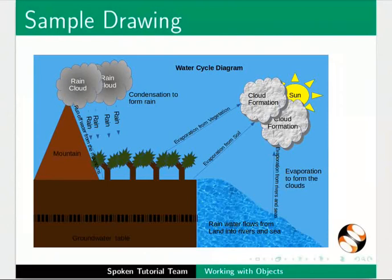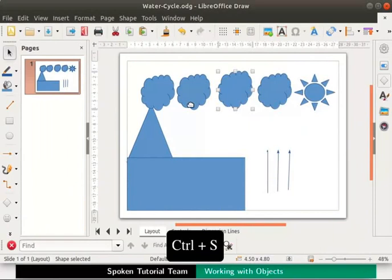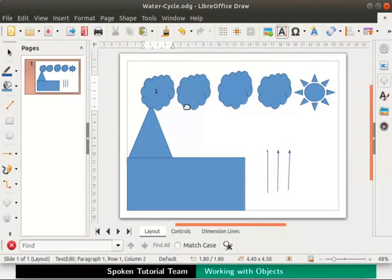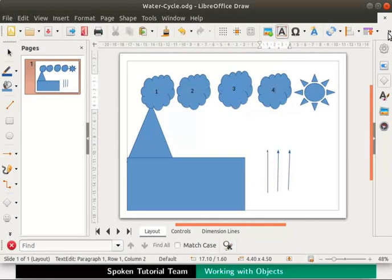Now let us arrange the clouds and the sun as shown. Press Ctrl+S keys to save the file. To identify the clouds let's number them 1, 2, 3, 4 starting from left to right. To insert the numbers, select the first cloud, double click and type 1. Similarly number the other clouds too. If you have resized your LibreOffice window some of the icons may not be visible — in that case click on the double arrow icon at the end of the toolbars to see the hidden icons.